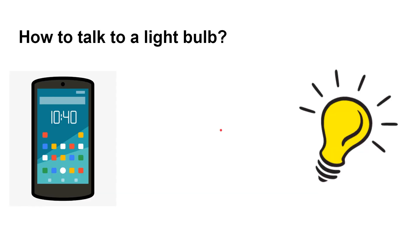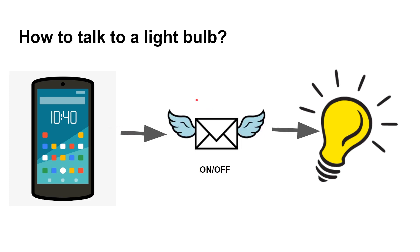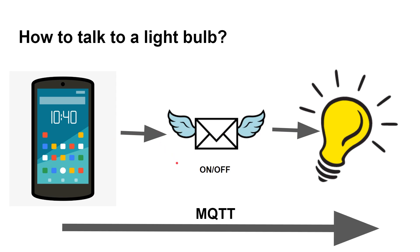Here I've got a simple example: I've got a smartphone and a light bulb. Both of them can connect to my local Wi-Fi and I want them to talk to each other. If we want to send a message — for example, switch the light bulb on or off from the smartphone — then we need a way to do it, and MQTT provides that way. You can send an on or off message over MQTT and it gets from the smartphone to the light bulb.